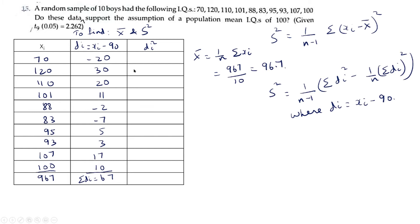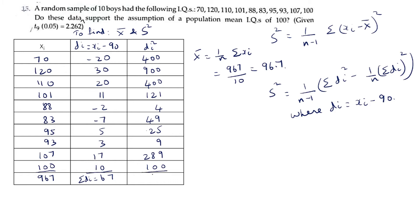Now finding di²: (-20)² = 400, 30² = 900, 20² = 400, 11² = 121, (-2)² = 4, (-7)² = 49, 5² = 25, 3² = 9, 17² = 289, 10² = 100. Adding all these gives Σdi² = 2297.